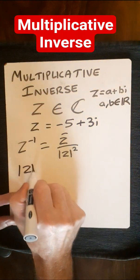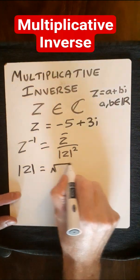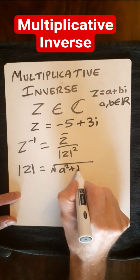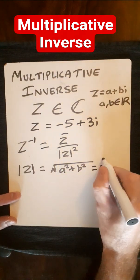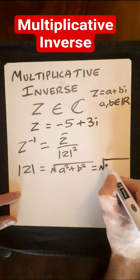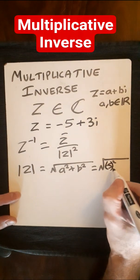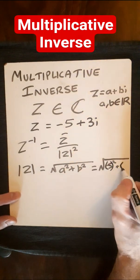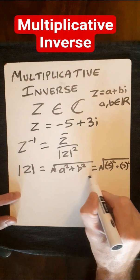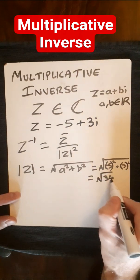Now the modulus of a complex number is simply the square root of a squared plus b squared, just like Pythagoras. So then we've got minus 5 squared and 3 squared. So this will come to square root of 34.